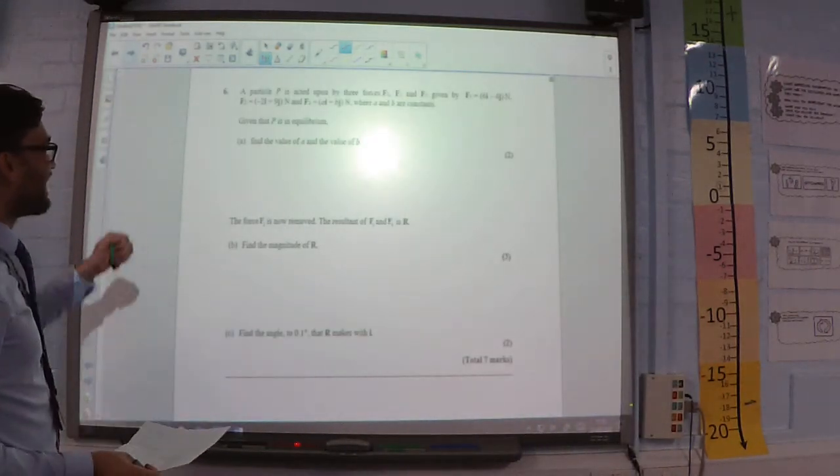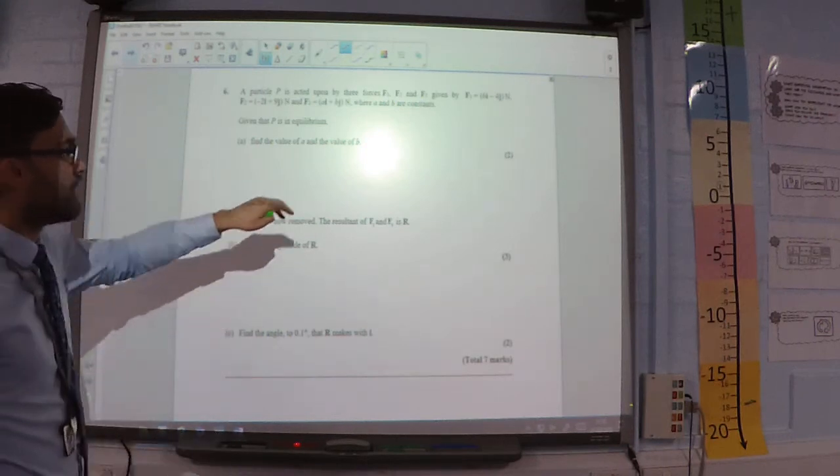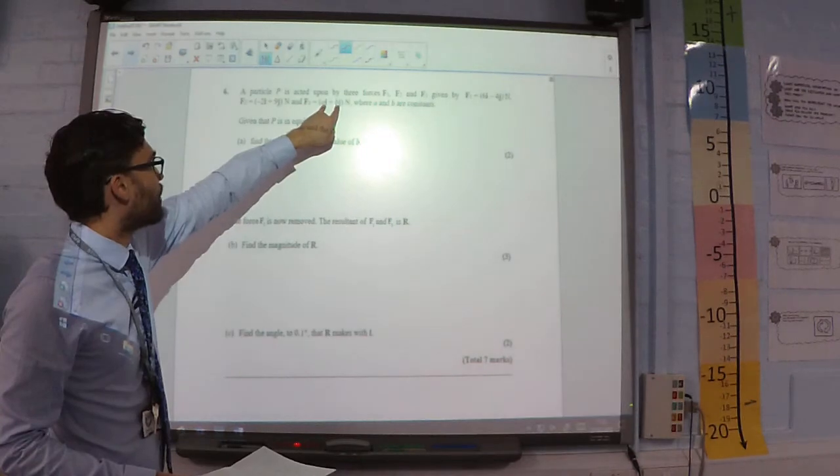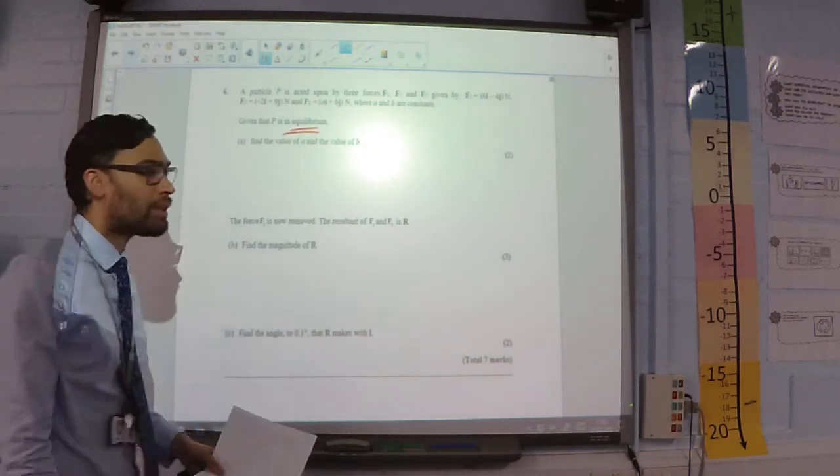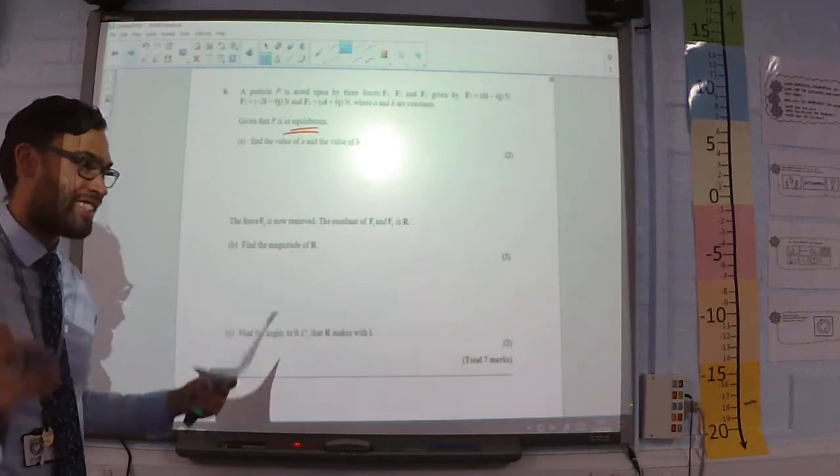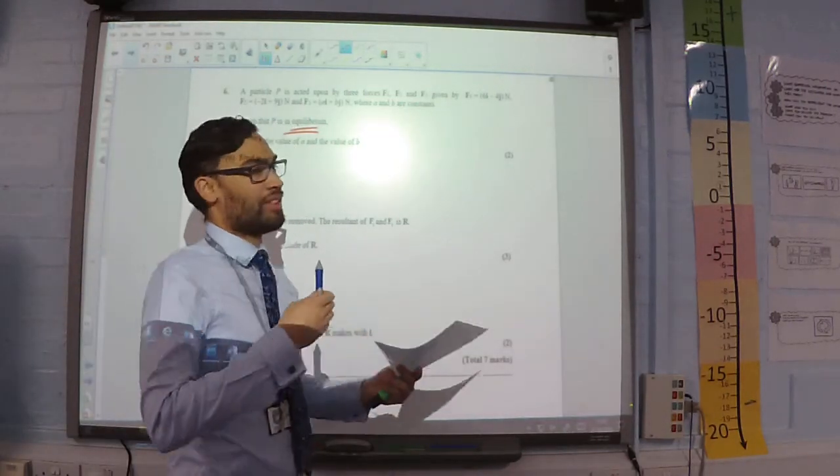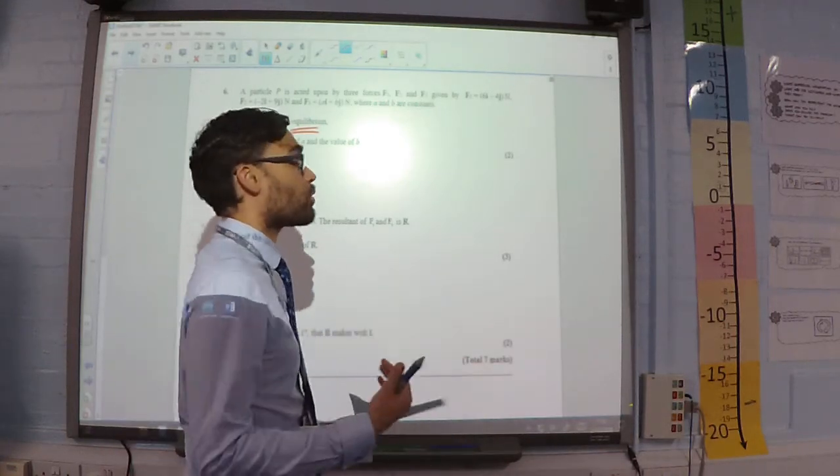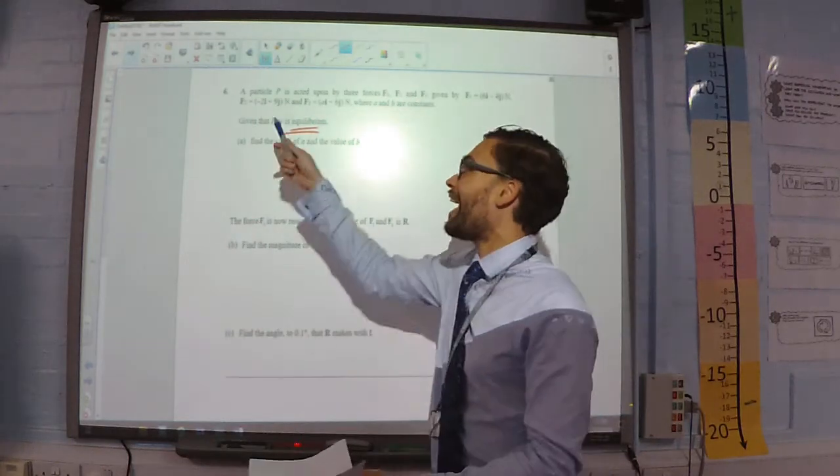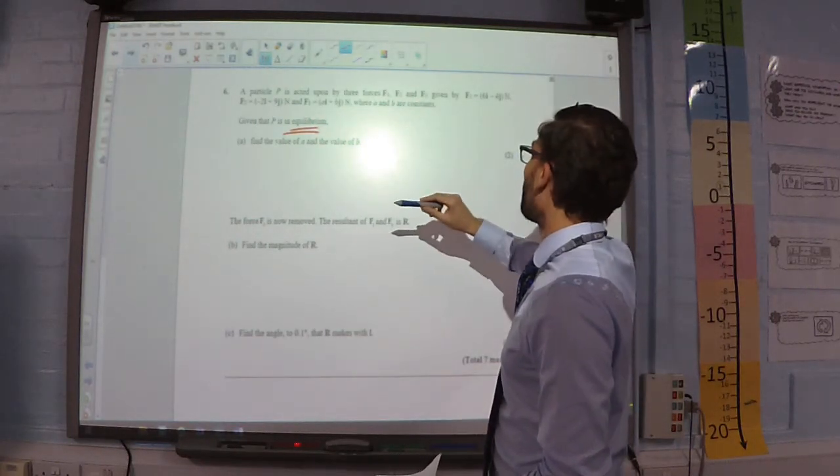Question 6. A particle is acted upon by three forces. And we have all of them except exactly what F3 is. Now, given that P is in equilibrium. Equilibrium means that acceleration is 0. So, the resultant force is equal to mass times by acceleration. In this case, the resultant force is 0. So, if I add these three together, I must get 0.